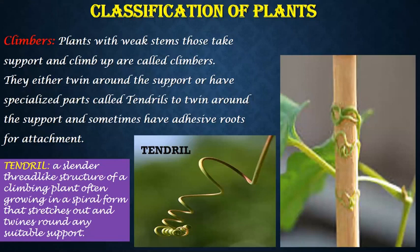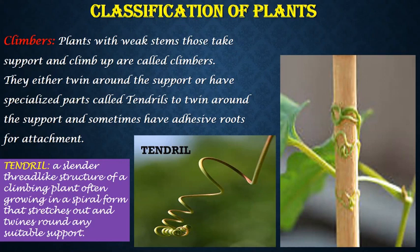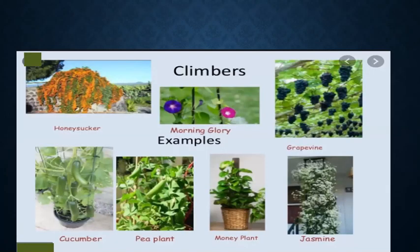Now let's study about some plants called climbers and creepers. What are climbers? Plants with weak stems that take support and climb up are called climbers. They either twine around the support or have a specialized part called tendrils to twine around the support, and sometimes have adhesive roots for attachment. A tendril is a slender thread-like structure of a climbing plant, often growing into a spiral form, that stretches out and twines around any suitable support. Some common examples of climbers are honeysuckle, morning glory, grapevine, cucumber, pea plant, money plant, jasmine, etc.